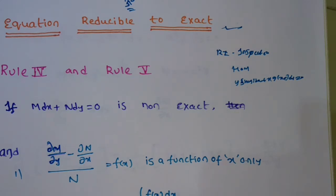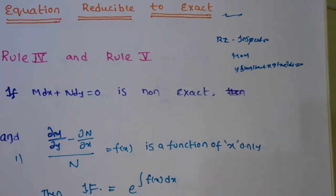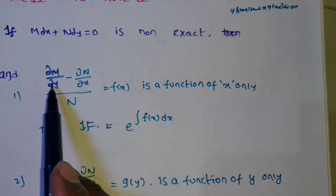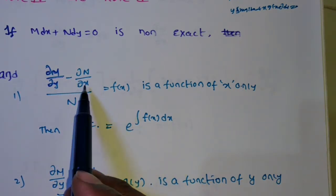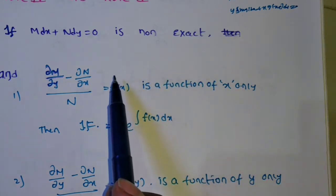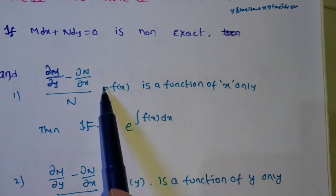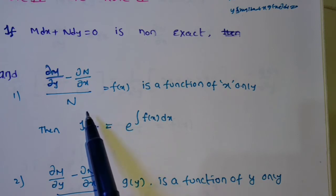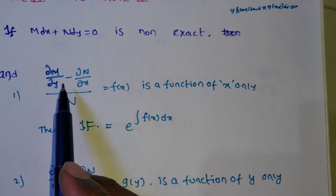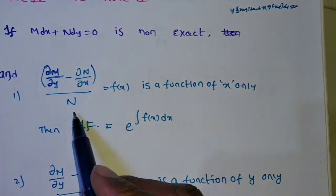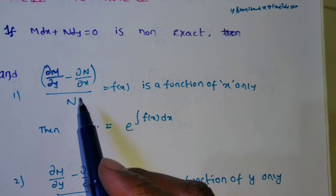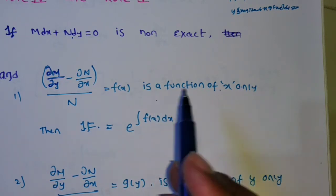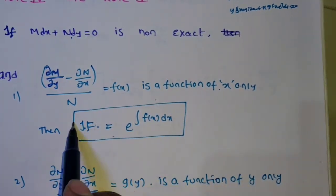Now Rule 4 and Rule 5 are almost similar. If the given differential equation M dx + N dy = 0 is not exact, find ∂M/∂y and ∂N/∂x. If it is not satisfying inspection, homogeneous, or the y·f(xy) method, then find ∂M/∂y minus ∂N/∂x. If dividing by N gives a function in terms of x alone, then the integrating factor is e to the power of integral of f(x) dx.